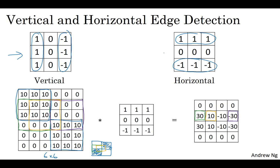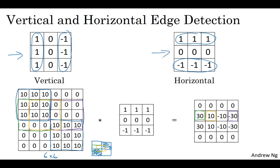In summary, different filters allow you to find vertical and horizontal edges. It turns out that the three by three vertical edge detection filter we use is just one possible choice. Historically, in the computer vision literature, there was a fair amount of debate about what is the best set of numbers to use. Here's something else you could use: maybe 1, 2, 1, 0, 0, 0, minus 1, minus 2, minus 1. This is called a Sobel filter.